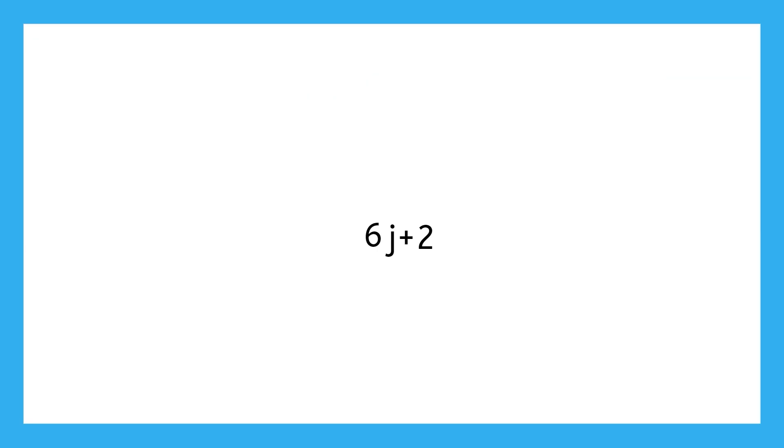A number can also appear on its own without any variables, like this 2 that is being added to our expression. This number is called a constant. Constants are important because they show a fixed value that doesn't change in the expression, hence its name, constant.